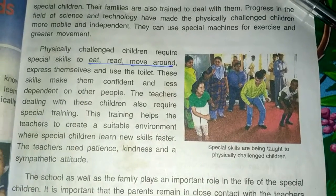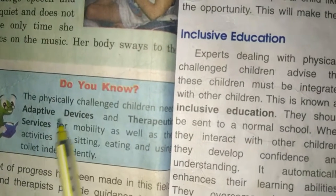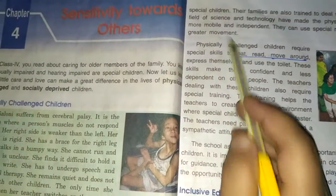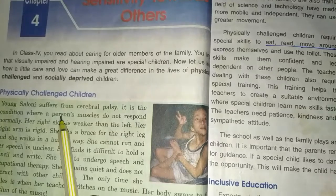Physically challenged children need adaptive devices — extra devices that support them in their daily chores — as well as therapeutic devices for mobility and other activities like sitting, eating, and using the toilet independently, rather than depending on others. We will cover this much today. You can read the chapter up to here, and we will discuss the next topics in the live class. Thank you.